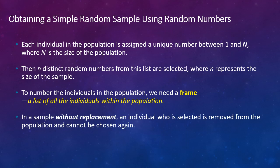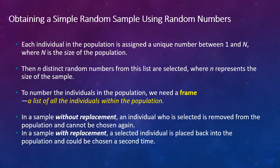We've already talked about this, and this is the vocabulary language. In a sample without replacement, like we saw in the ticket example one, an individual who is selected is removed from the population and cannot be selected or chosen again. However, there are samples with replacement where a selected individual is placed back into the population and could be chosen a second time. Okay, so those are two different types: without replacement means you can't have duplicates in your sample; with replacement means that you can.